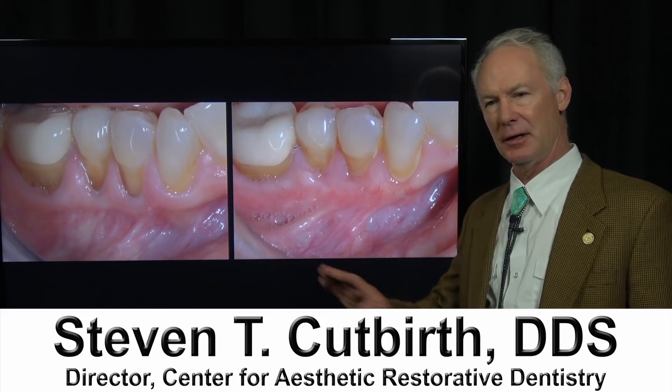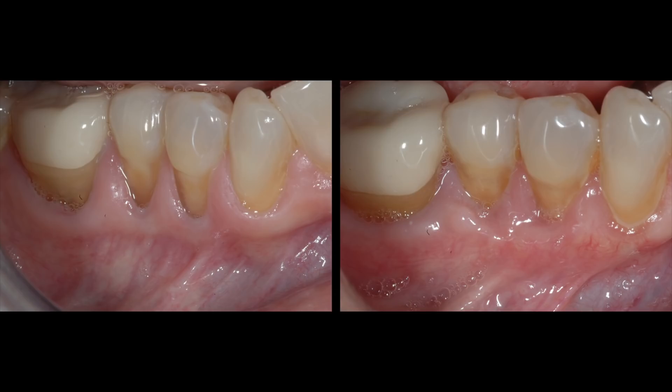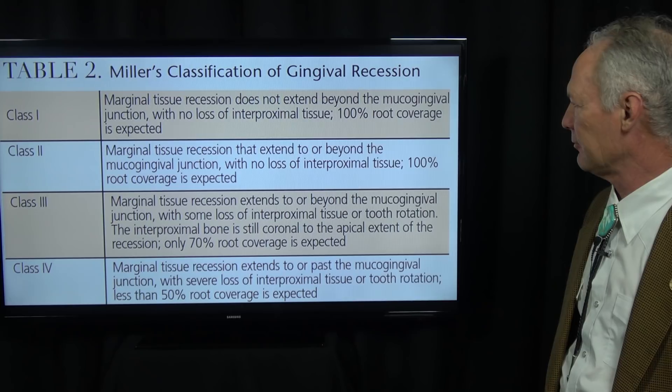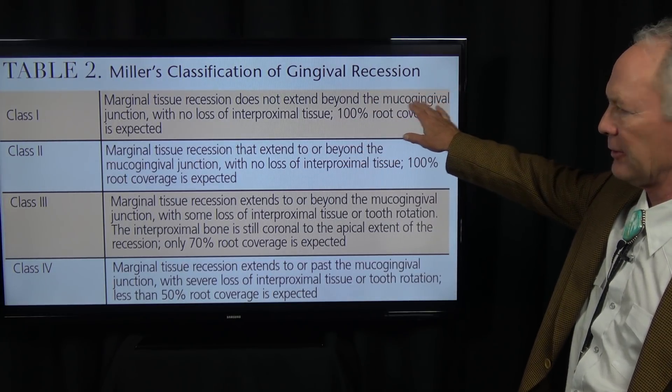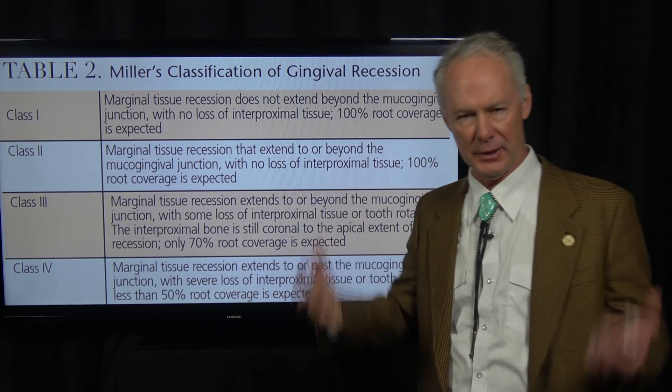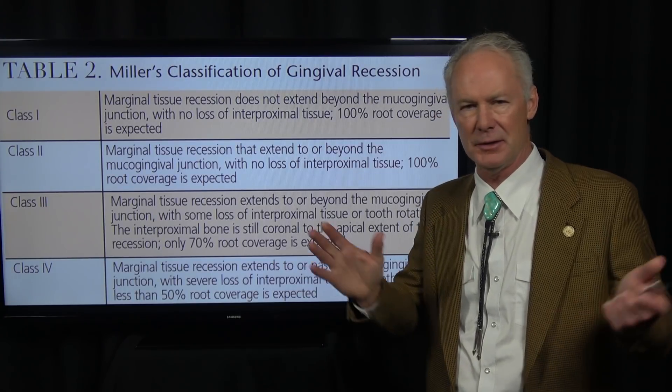Gingival grafting of the facial of lower bicuspid teeth using periderm. Let's first talk about Miller's classification of gingival recession and what we can reasonably expect from a gingival grafting procedure. The first objective of gingival grafting, in my mind, is adequate attached gingiva. The second objective is to improve the aesthetics of the tooth.